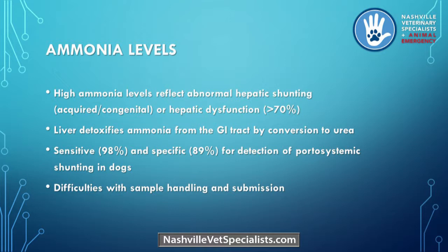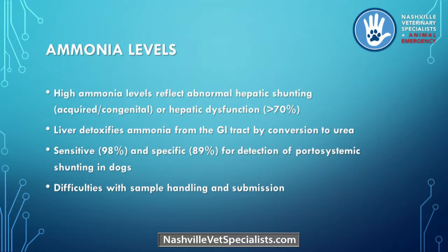Ammonia testing — some newer graduates may still be doing these at universities. A baseline ammonia or ammonia tolerance test has wonderful utility with hepatic encephalopathy or significant hepatic dysfunction greater than 70%, as we see with shunt dogs or significant acquired liver disease. Ammonia from the GI tract is normally detoxified in the liver to urea. It's a great test with great sensitivity and specificity for portosystemic shunting, but it's a pain to run.